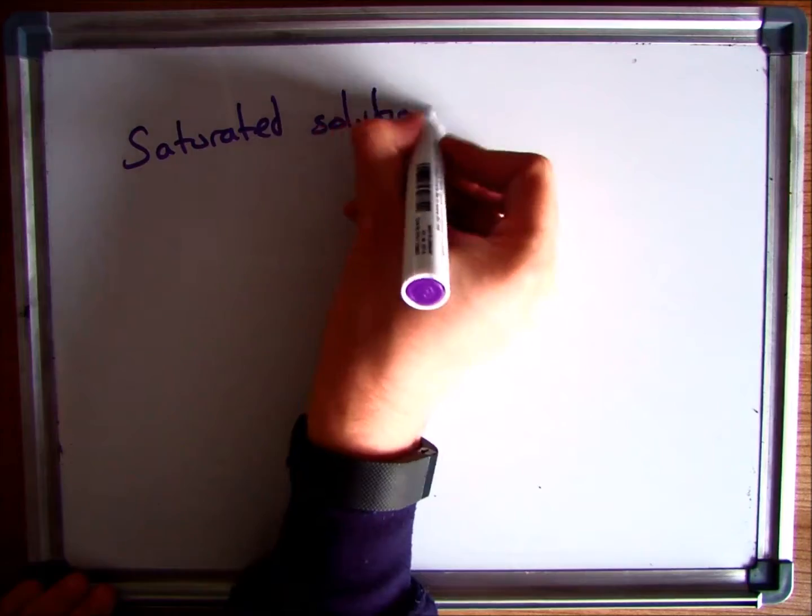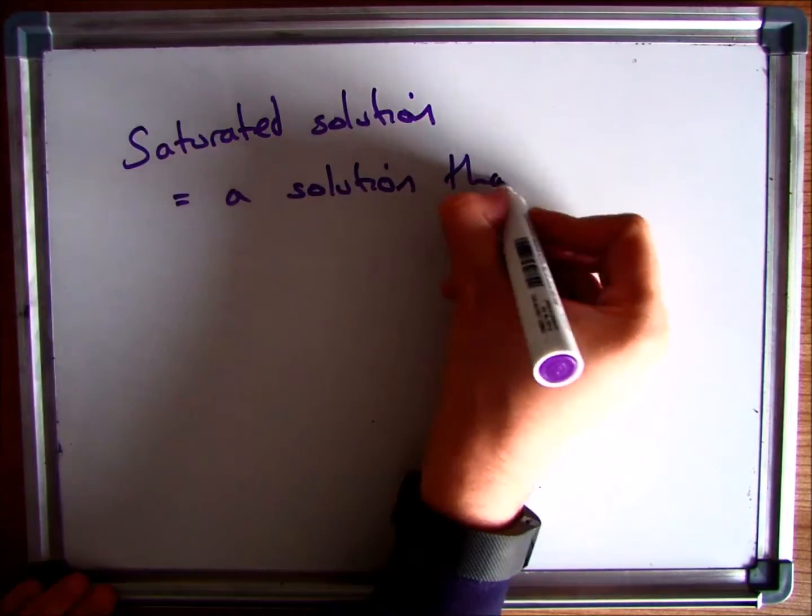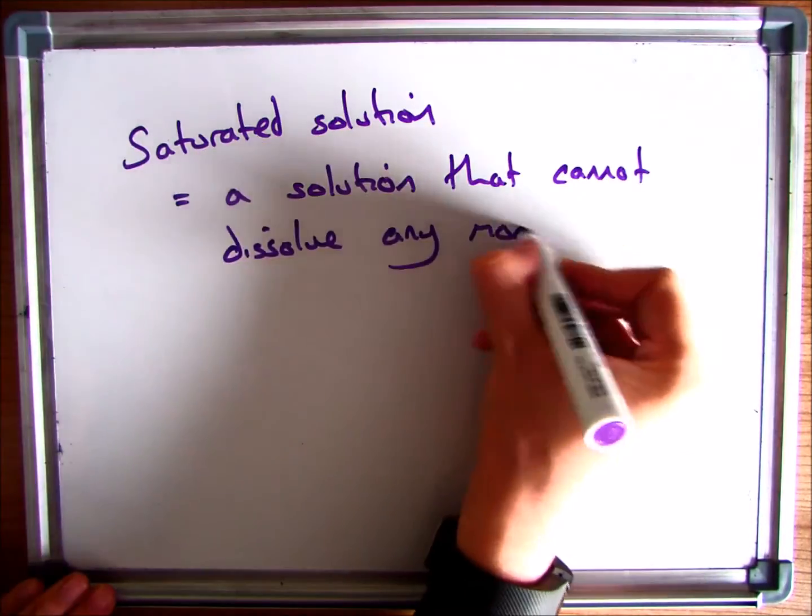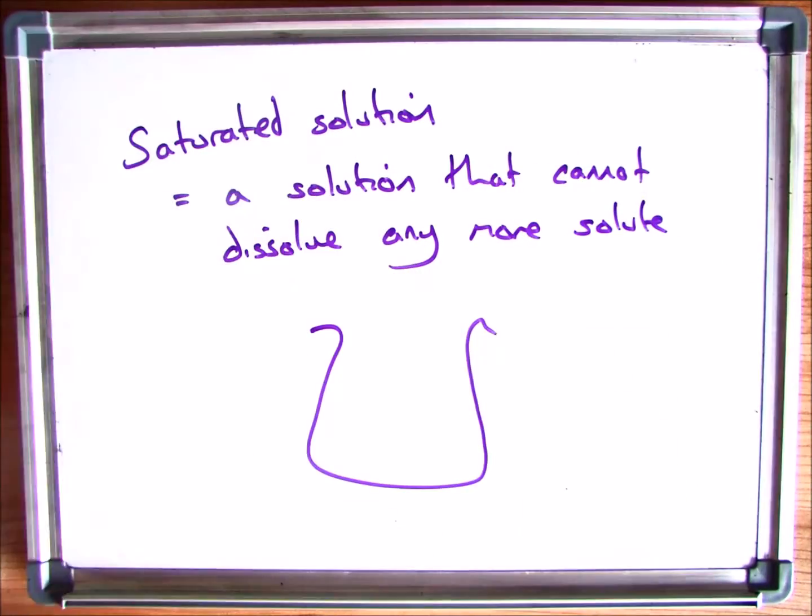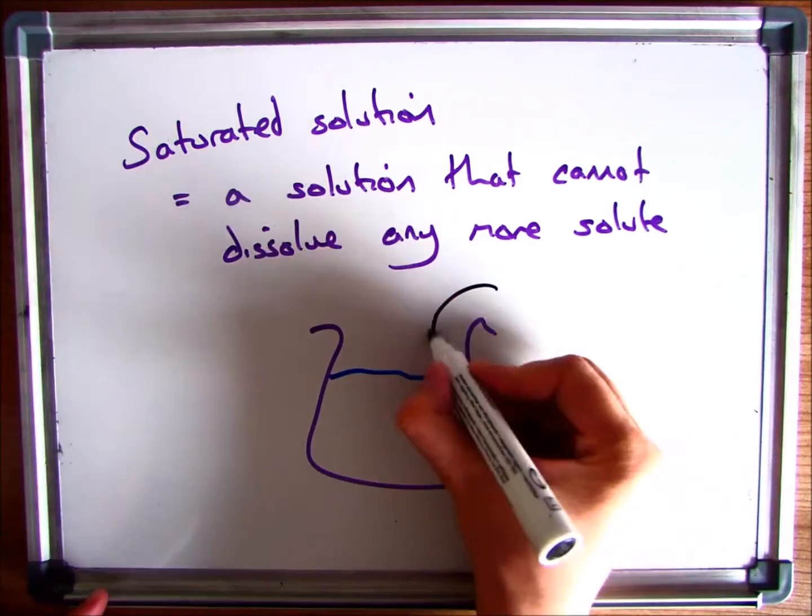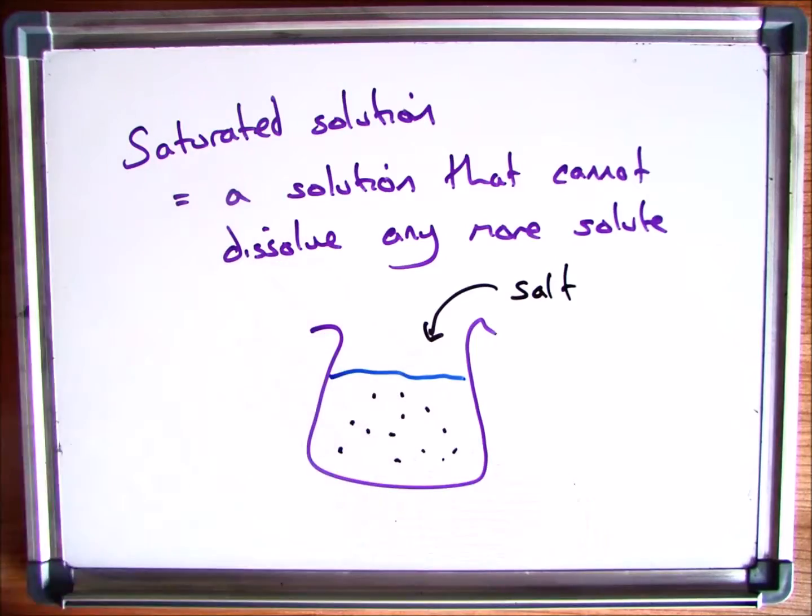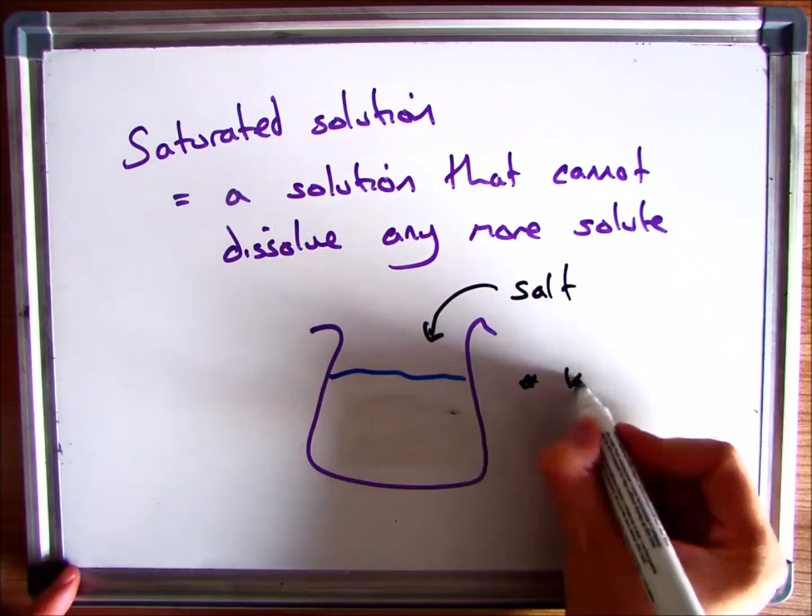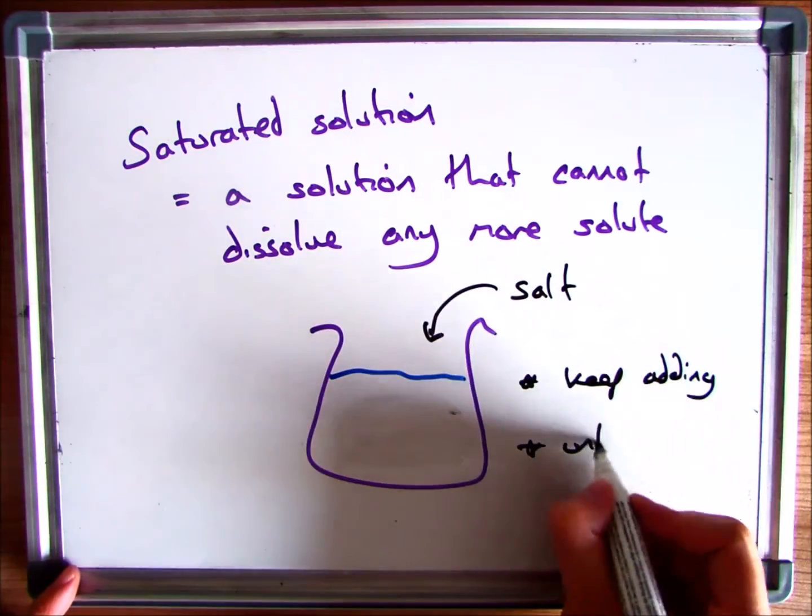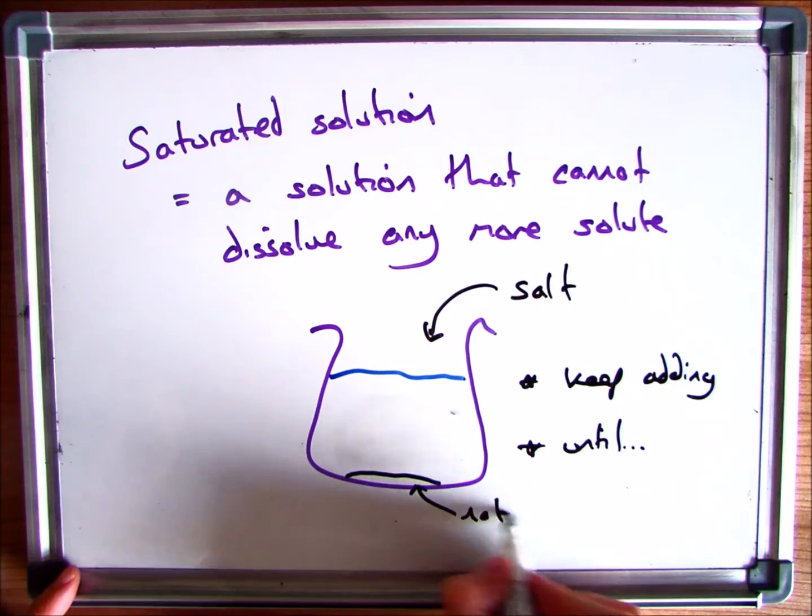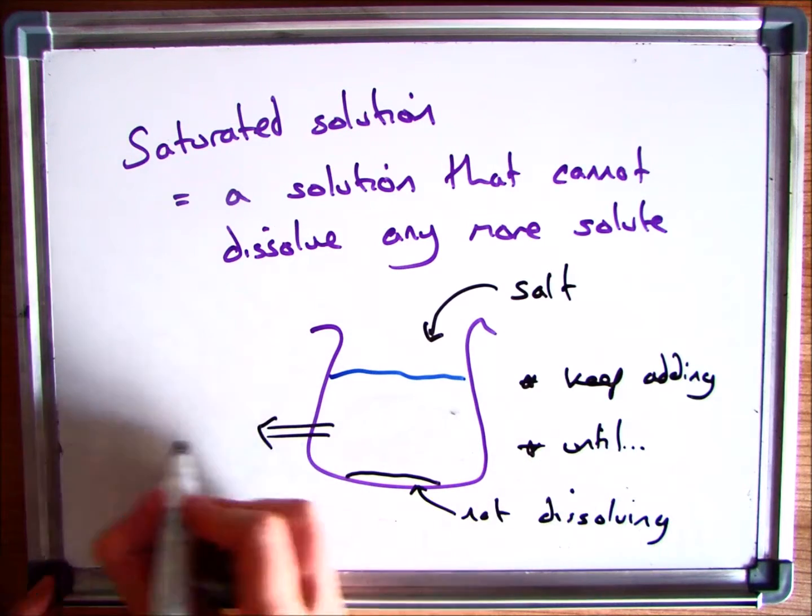The next key phrase is what a saturated solution is. For example, if you take salt and you try and put it into water, you'll be able to dissolve it. If you keep doing this, they'll get to a point where no more of that salt can get into the solution. So we say that it's saturated. It means a solution that cannot dissolve any more of that solute.